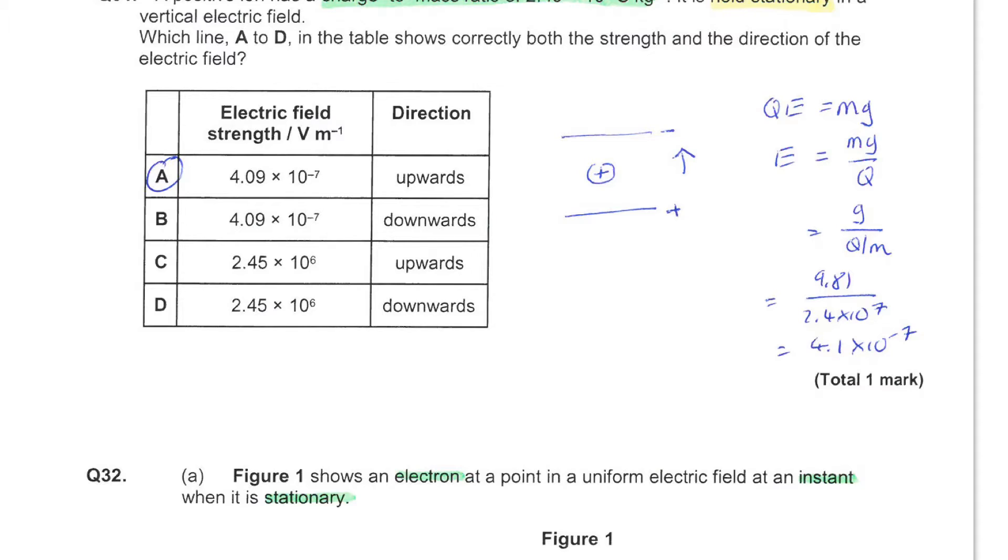If the ion is held stationary, then the forces acting on it must have a resultant of zero. We have the weight acting down and acting upwards we must have the force due to the electric field. This means that the lower plate must be positive and the upper plate negative, leading to an upward electric field. So that limits our choices down to these two values here.